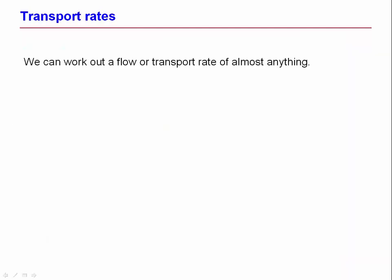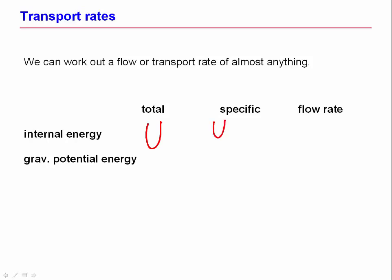Now it turns out you can have a transport rate of almost anything, not just mass flow rates. You can have flow rates or transport rates of energy as well. If you think about internal energy, which is big U. Internal energy in joules, total internal energy is big U. Specific internal energy is internal energy per unit mass and we write it as a lowercase u.